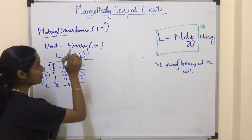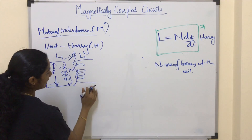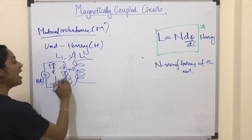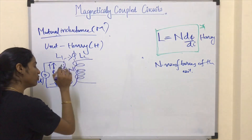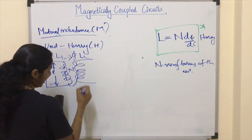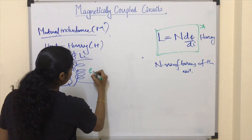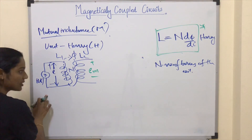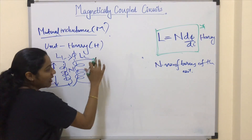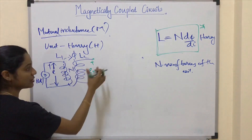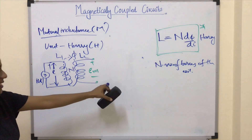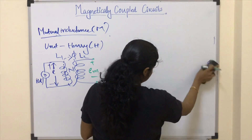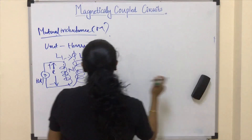In mutual inductance, unlike self induced EMF where we considered only one coil, coil 2 is present in the neighborhood of coil 1, in close proximity to it. As the magnetic flux created by coil 1 links with coil 2, there may be some induced EMF in coil 2 due to the time varying nature of current passing through coil 1. I assume coil 2 is open circuit.